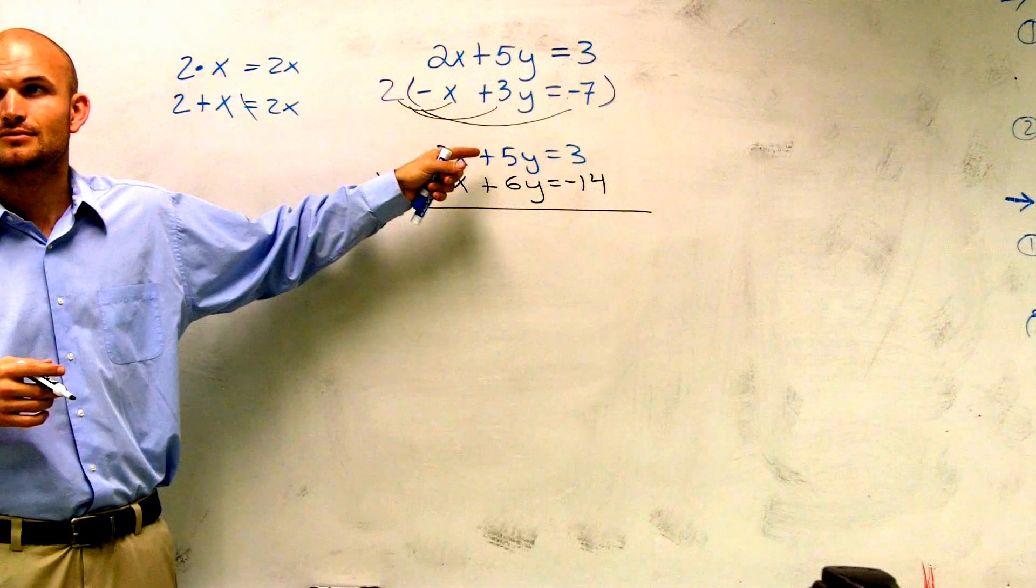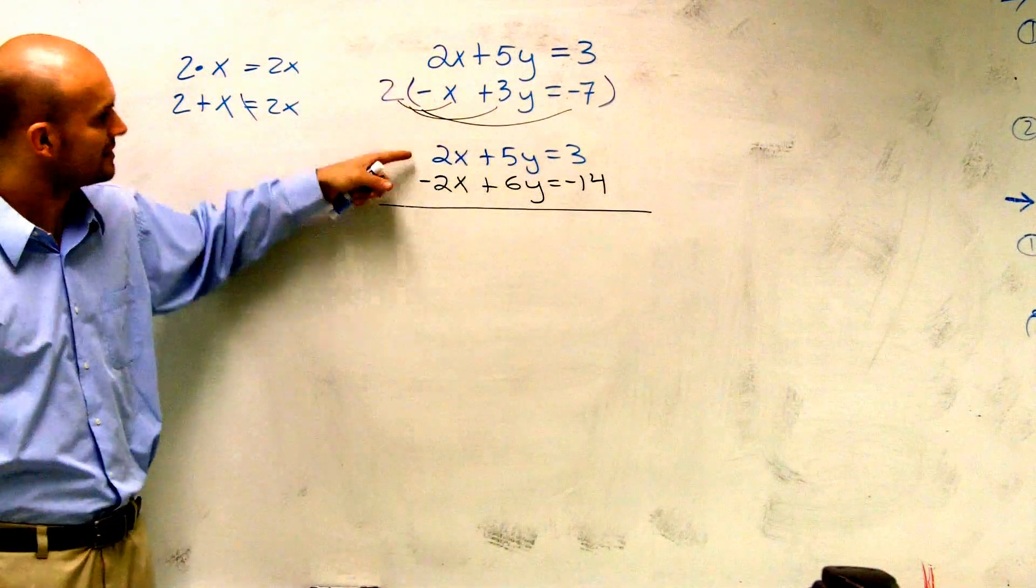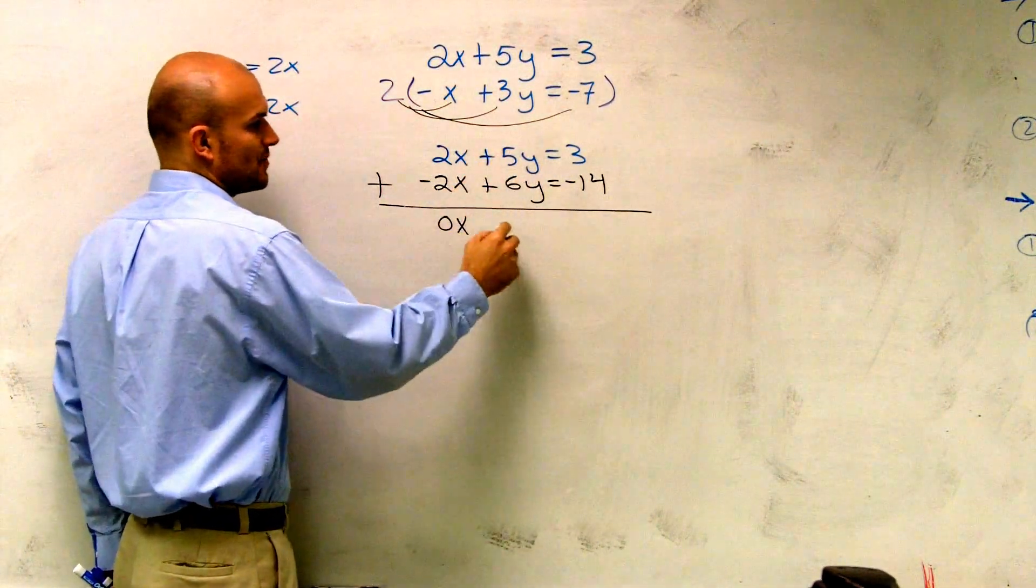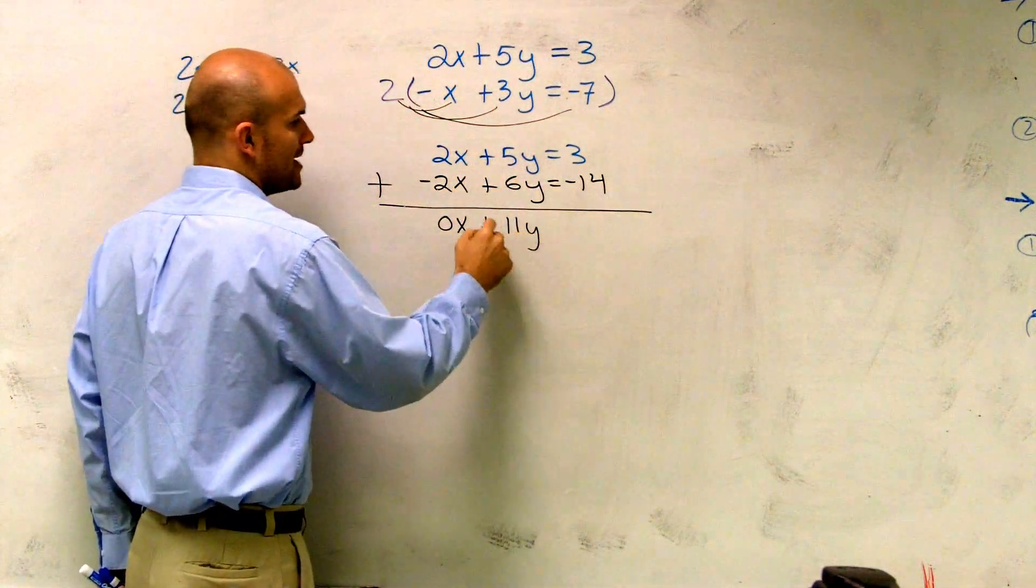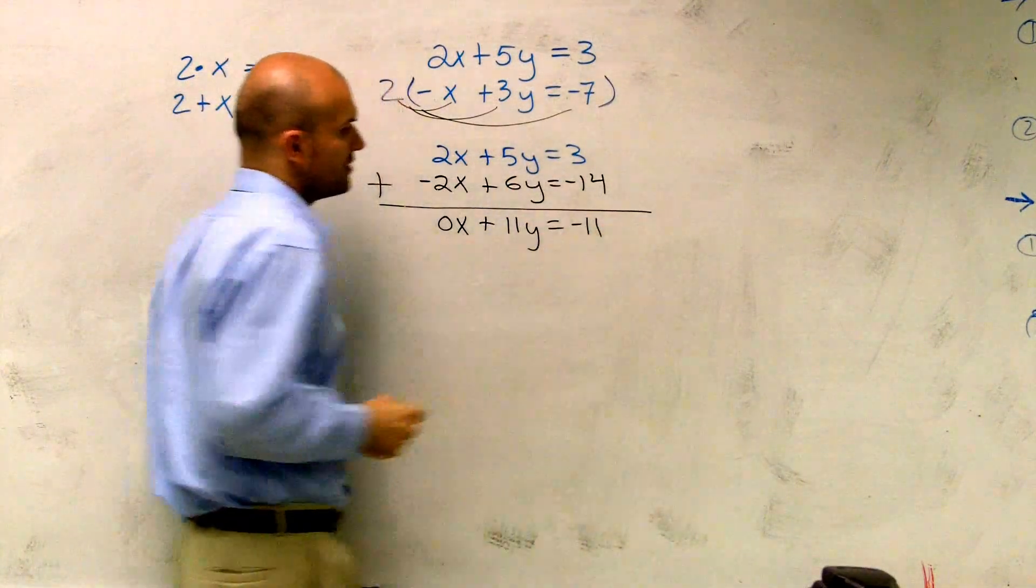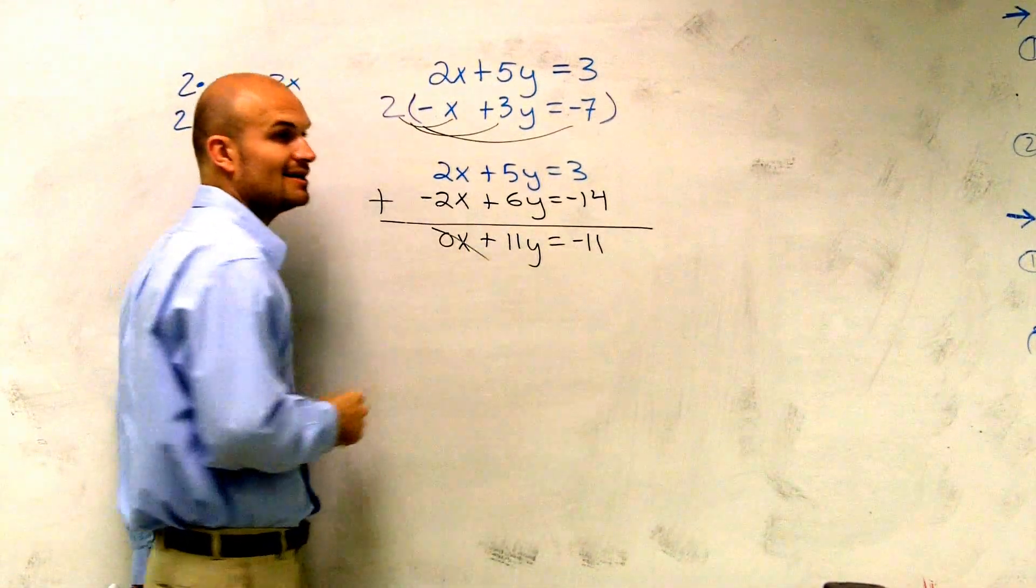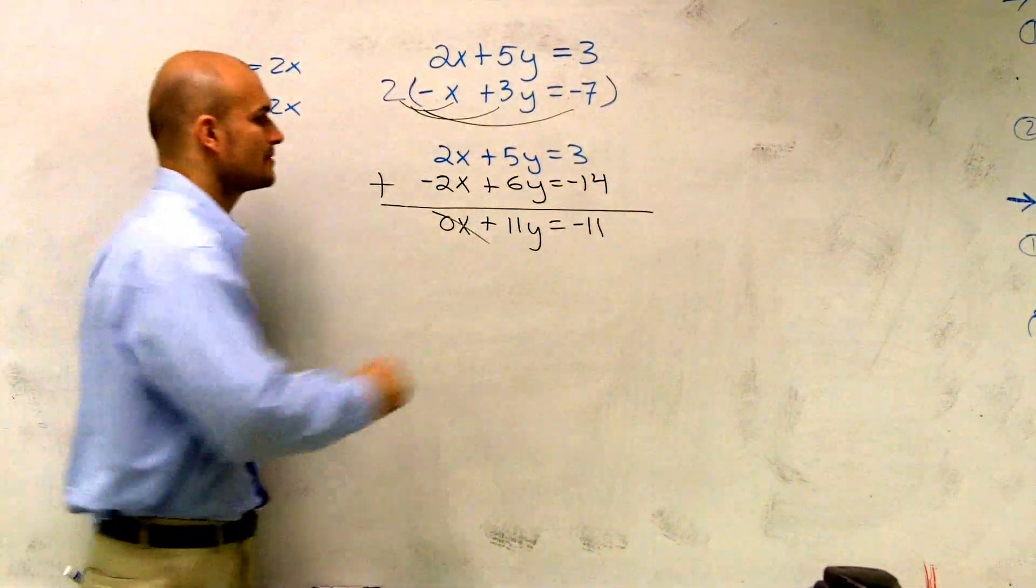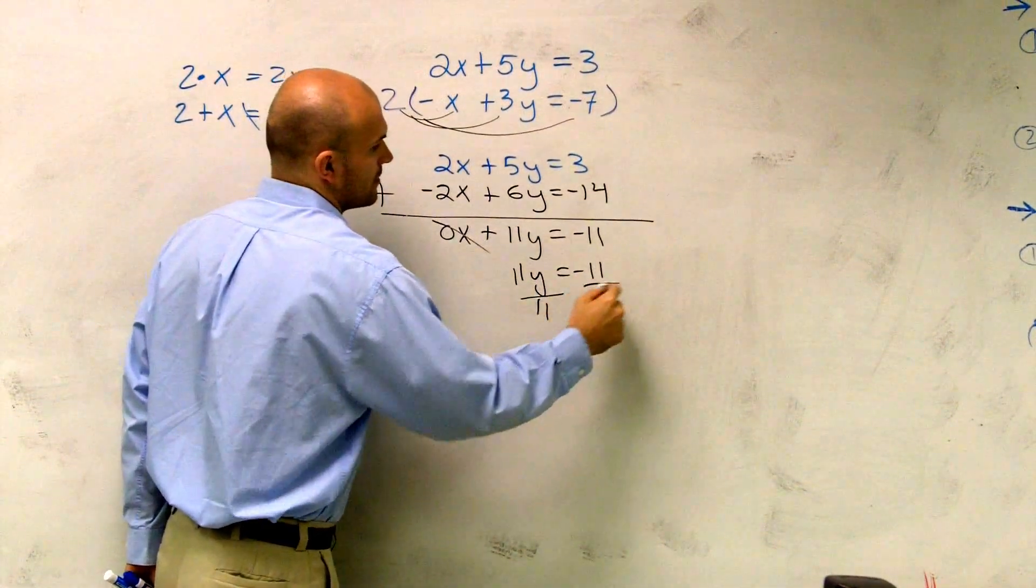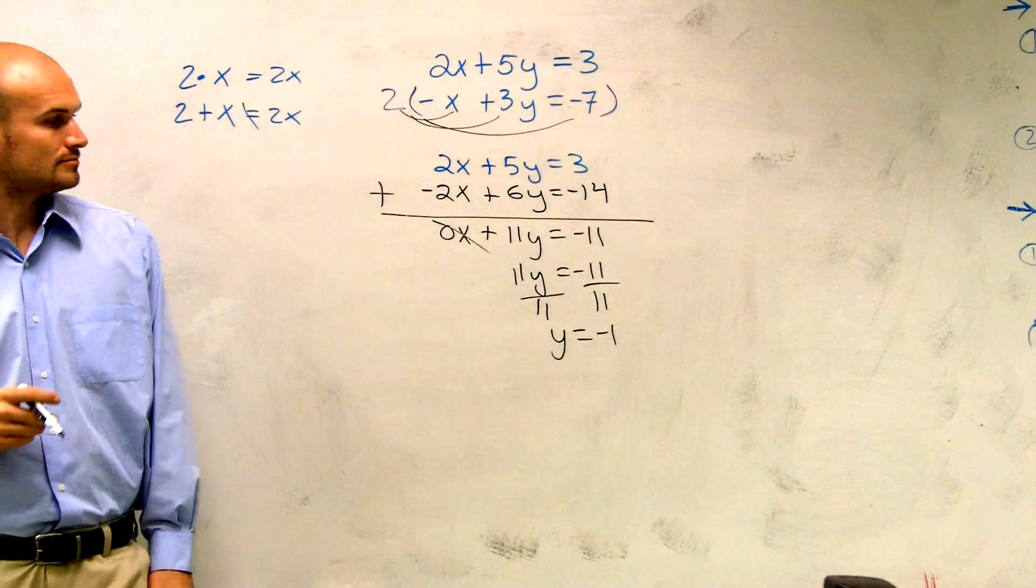So 2x plus negative 2x gives you 0x. 5y plus 6y gives you 11y. Positive 11y. 3 plus negative 14 equals a negative 11. That eliminates, 0 times x eliminates my variable. So I have 11y equals negative 11. Y equals negative 1.